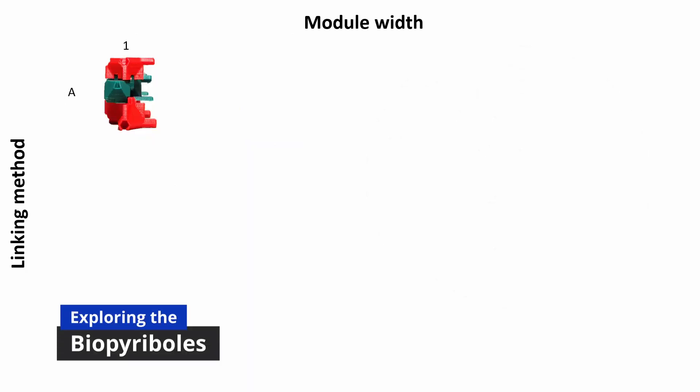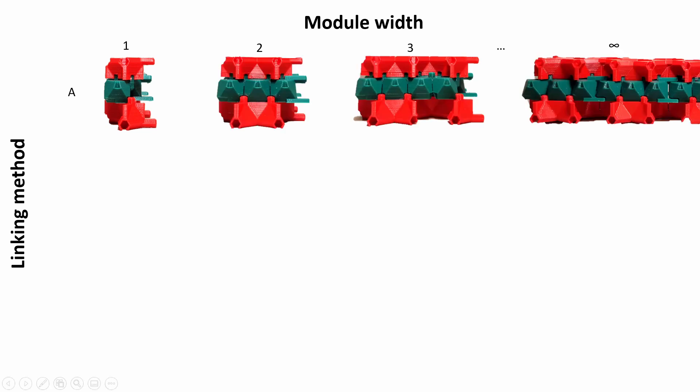Here's the basic building block of a biopyribole. It has a width of one unit, and we can connect another block horizontally to make widths of 2, 3 and so on to infinity.